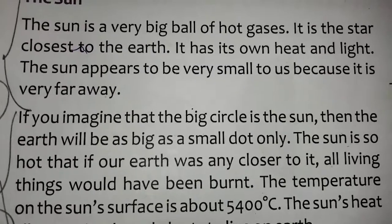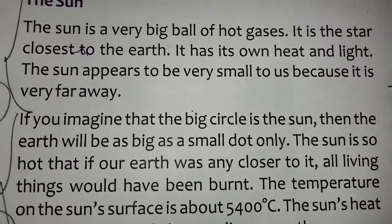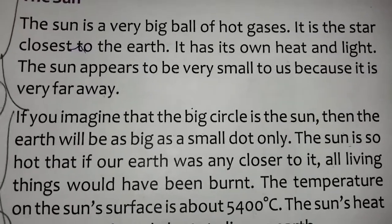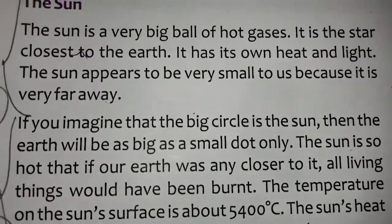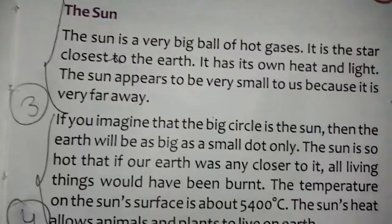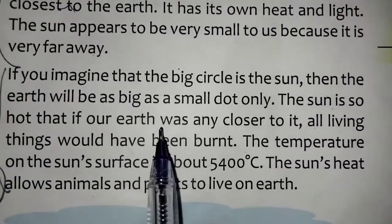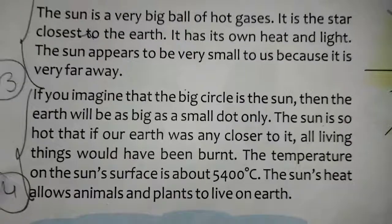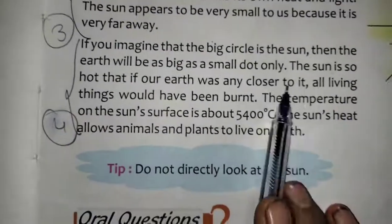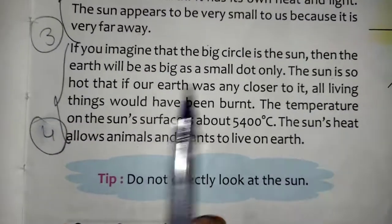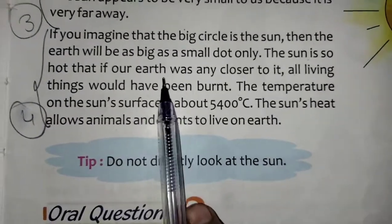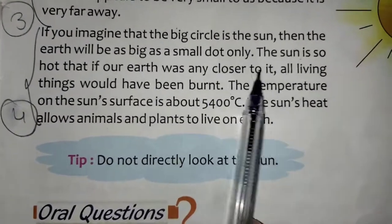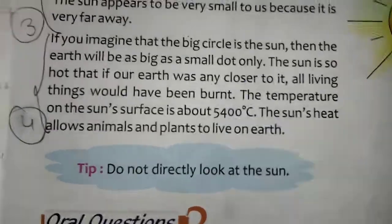The sun looks very small because it is so far away. If you imagine a big circle is the sun, then the earth will be as big as a small dot only.